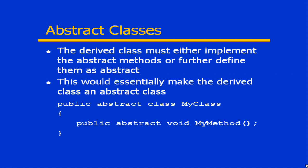Because MyClass contains an abstract method, I must define that class as abstract. Now, an abstract class can have non-abstract methods, so every abstract class can have a mixture of abstract versus non-abstract methods. However, if you do derive from that class, you must provide an overriding implementation for every single one of the abstract methods defined within the abstract class.